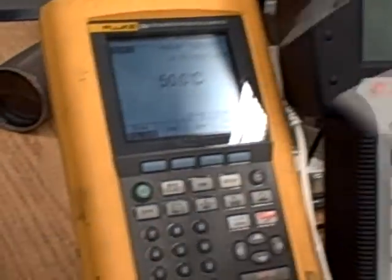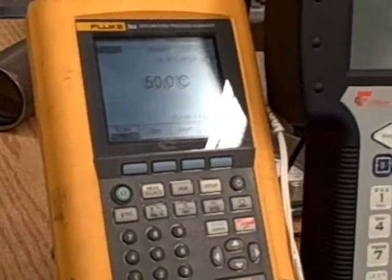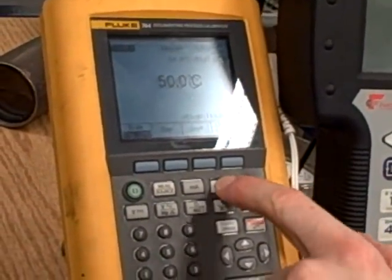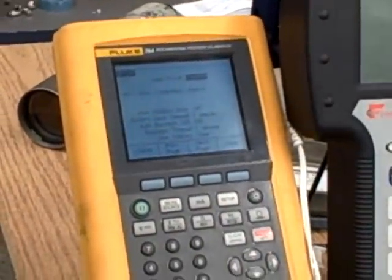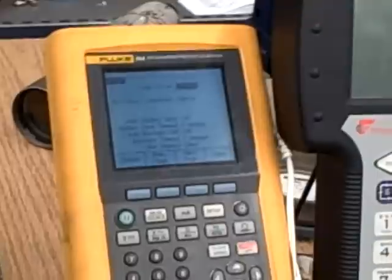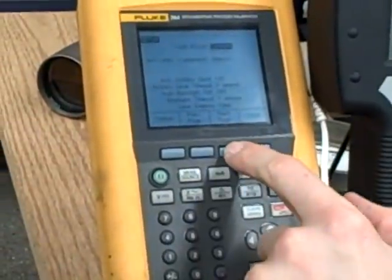Now we want to switch to degrees Fahrenheit. I go into the Setup menu. Here I've got several pages of parameters I can set up. The degrees Fahrenheit unit is not on this page, so I'll go to the next page.